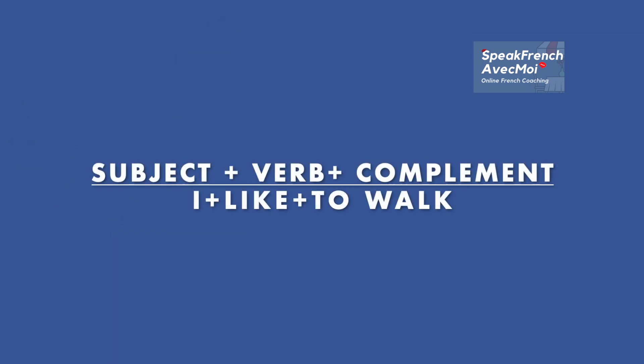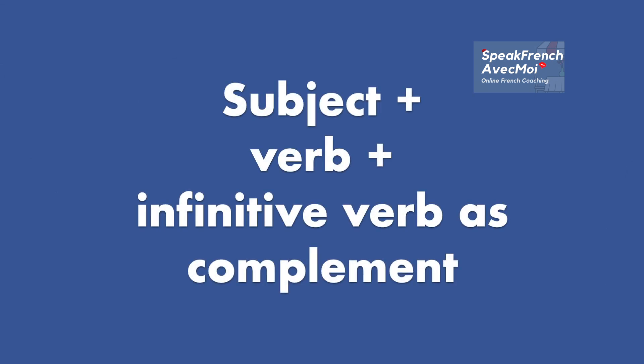In English, if I say I like to walk, I have I the subject, like the verb at present tense, and to walk as a complement. We have the same structure in French, meaning that we have a set of French verbs that can be followed by another verb at the infinitive to make a complement. 10 magic verbs that you can use — and you know when you use them, you only need to use another verb at the infinitive as a complement. So you ready?